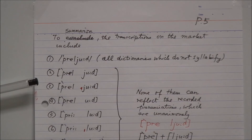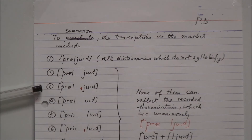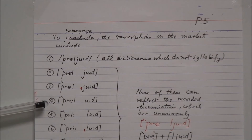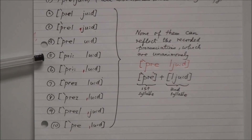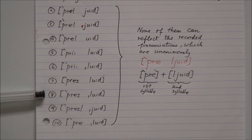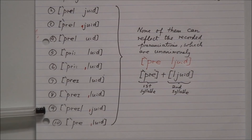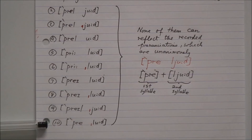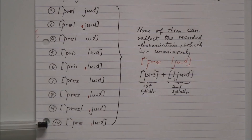To summarize, the transcriptions on the market include ten different versions of 'prelude' — numbered one through ten. None of them can reflect the recorded pronunciations, which are unanimously 'prelude.'